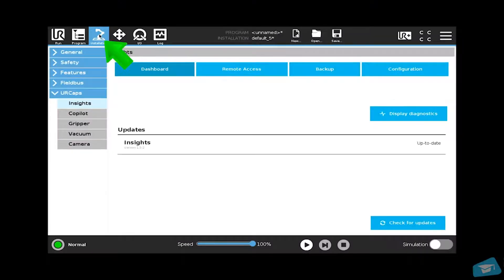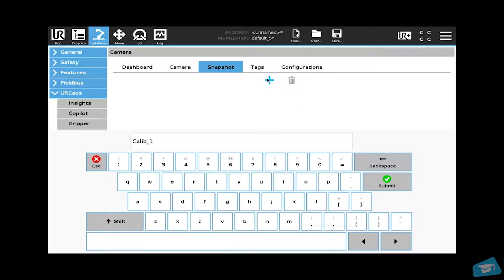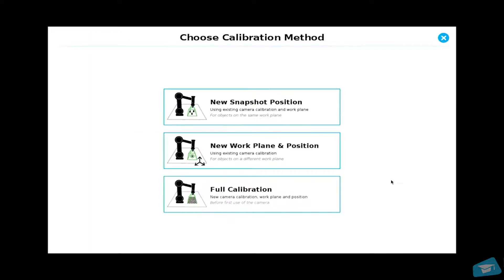Go to the installation tab, UR caps, camera, snapshot, and tap the plus button. Enter a name for the calibration.